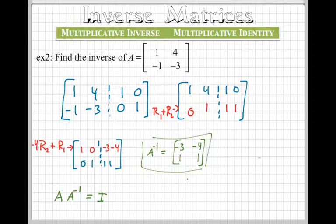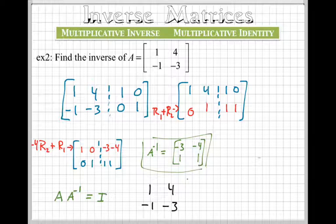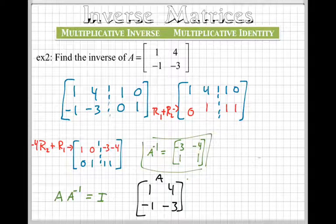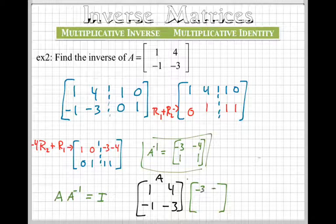Let's multiply our original matrix, 1, negative 1, 4, negative 3. That's A, times our inverse matrix, negative 3, negative 4, 1, and 1. That's the inverse matrix. Okay, let's see what we get.